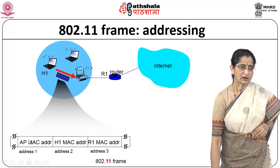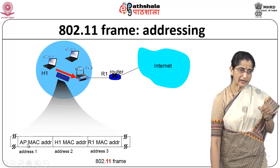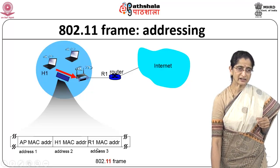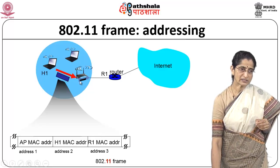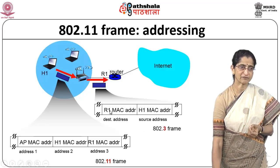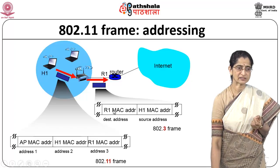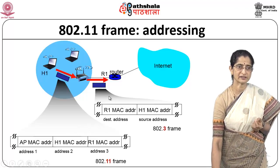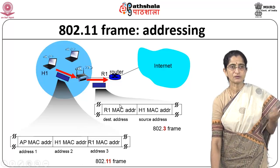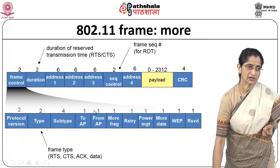To illustrate addressing: when H1 connects to the access point, address 1 has the AP MAC address (destination), address 2 has the H1 MAC address (source), and address 3 has the R1 MAC address. When the access point forwards the packet to the router over Ethernet (as an 802.3 frame), it uses R1's MAC as destination and H1's MAC as source. This is how the access point uses the address information to forward packets to the router.